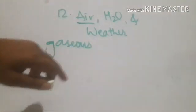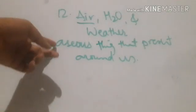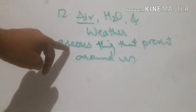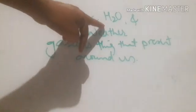Let us know what you mean by air. Air is present around us. Air is the thing that is present around us and it is in gaseous form. We can feel it but we are unable to catch it because it is gaseous. Water, on the other hand, is a liquid thing.